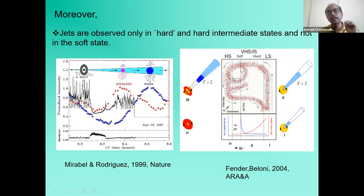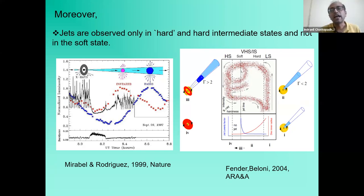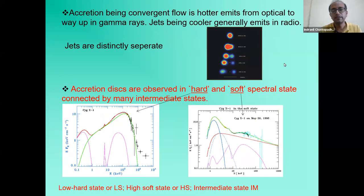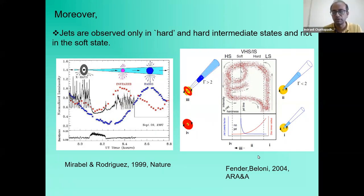The Fender-Belloni Q-diagram plots hardness ratio on the x-axis against intensity on the y-axis and shows a hysteresis behavior that black hole microquasars repeat over and over. In the typical hard state, radio jet emission appears; as the source moves to the hard-intermediate state the jet strengthens; and transitioning to soft triggers a relativistic ejection, after which the source reaches the soft state — the thermal-dominated, weak power-law state — and repeats the cycle every three to four months.